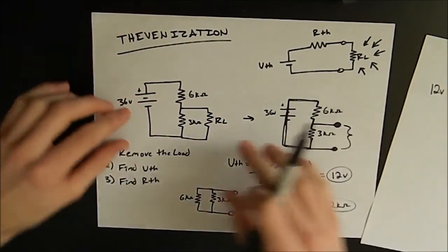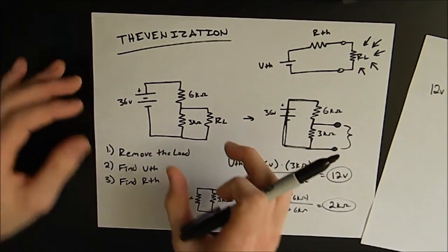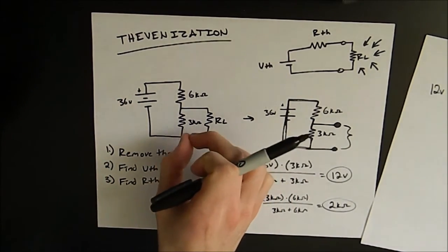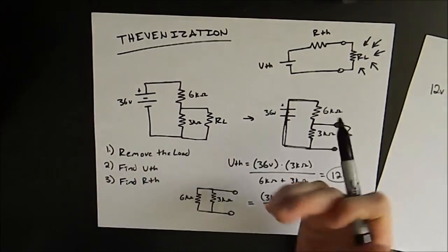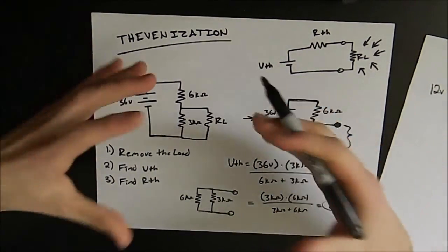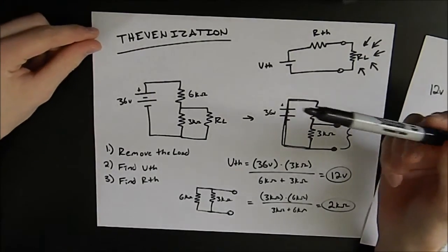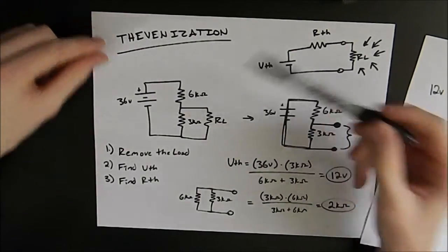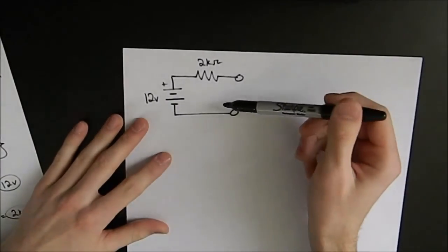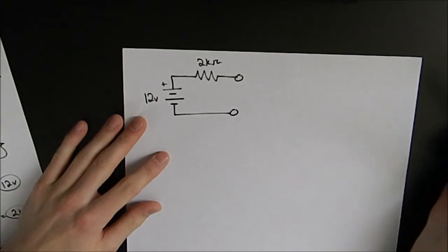Now in this example it's a very easy circuit. We could easily calculate the equivalent resistance of the parallel and then do a voltage divider. However once you get into larger more complicated circuits it's worth the time and the effort to do a simple theveninization of the circuit to create this and then to analyze this with different load resistances.